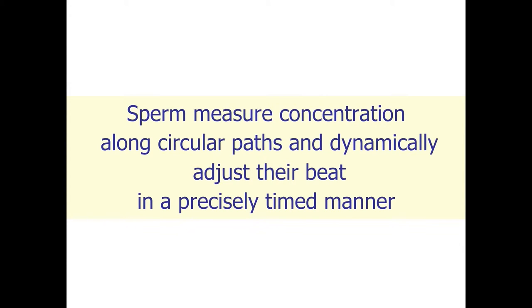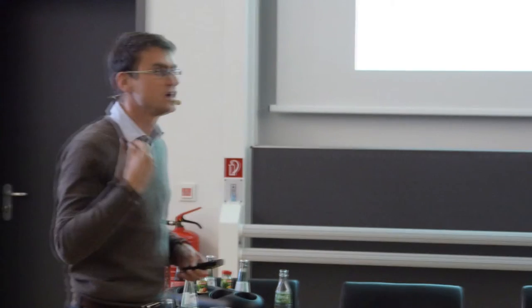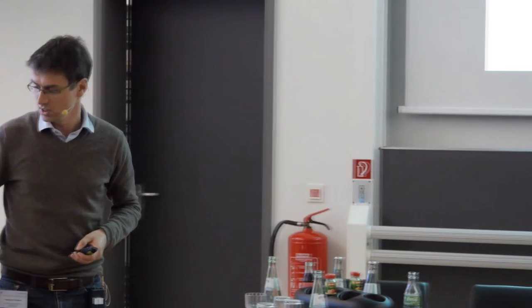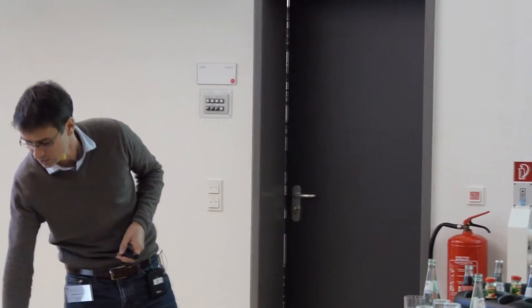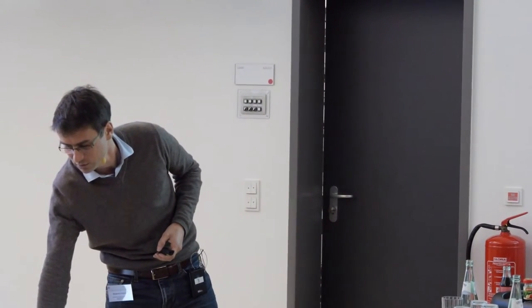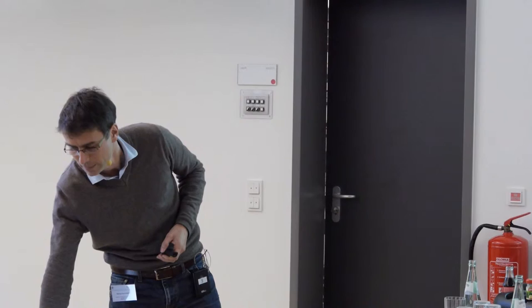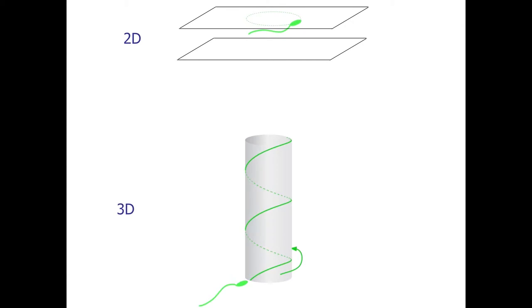To conclude this part: sperm measure concentration continuously while swimming along circular paths, then adjust their flagellar beat in a precisely timed manner. We have a nice match of theory and experiment. We had this theory some years ago and the question then was: we know that far from the boundary surface, sperm swim along helical paths — but how do they navigate along helical paths?